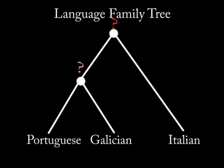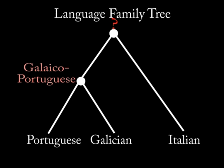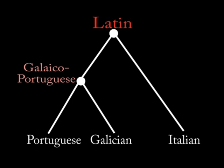Now we have two question marks on our diagram. They're just nodes, but they represent more than that — there's actually some language spoken in the past that must be the common ancestor of both Galician and Portuguese, otherwise they wouldn't share these common cognates. So these common cognates derive from words in a single ancestor language. There's an even more remote common ancestor of Galician, Portuguese, and Italian, and that's a form of Vulgar Latin.